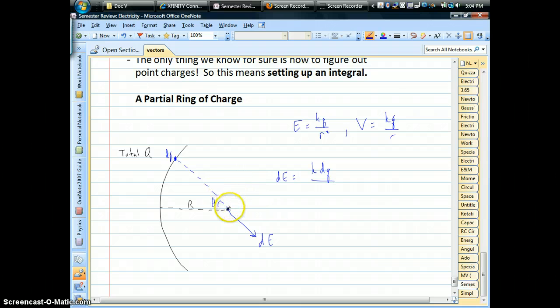Now in this case, we're trying to find the field right at the center of the ring that this thing came from. And so that distance from the charge down to the point is just the radius of the circle, so it's big R squared. Okay, so that's something we have going for us.